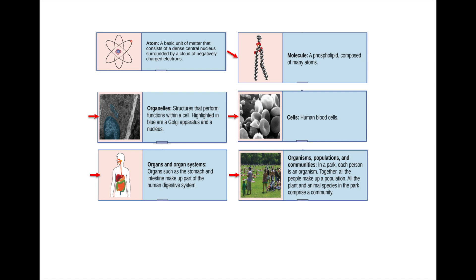In nature, populations don't survive individually in isolation — all organisms depend on each other. The way organisms interact with one another is called a community. So in this park, the community includes the green grass, the trees, the animal life, and the humans — all different populations interacting with one another.